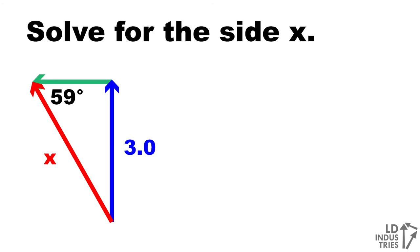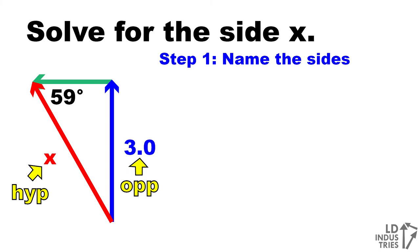Let's look at another triangle. Again, we're going to solve for the side x. But in this case, when we name our sides, we see that x is the hypotenuse. I know this because it's the longest side and it's across from the right angle in the triangle. The side that I have given for me is the opposite side. It's across from the 59 degree angle that I'm going to use in my calculation.